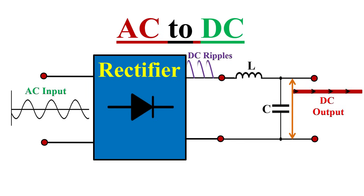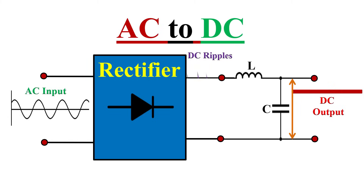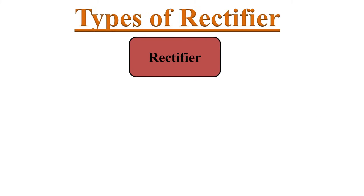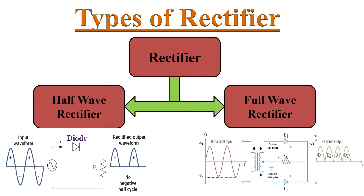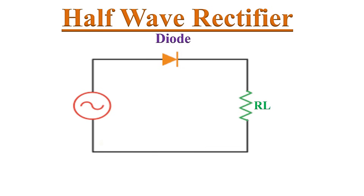This process of converting AC into DC is called rectification. Rectifiers are designed using a diode or a group of diodes. Rectifiers are essentially of two types: half-wave rectifier and full-wave rectifier. A half-wave rectifier uses only one diode, while a full-wave rectifier uses multiple diodes.